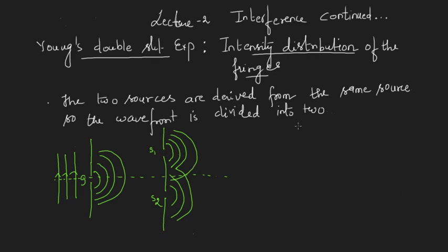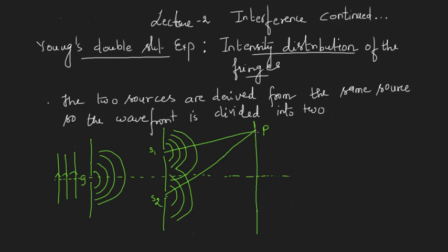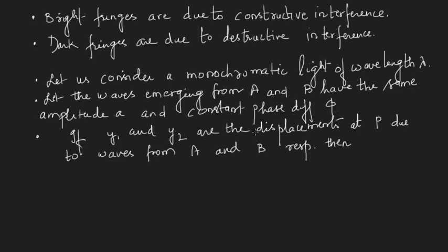From these two sources we will get two waves with constant phase difference. Let us take the two sources of the same amplitude a and try to see the pattern obtained on the screen. We will see that bright fringes are due to constructive interference and the dark fringes are due to destructive interference. Let us take a monochromatic light of wavelength lambda.